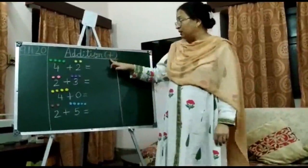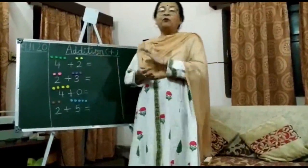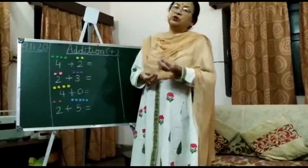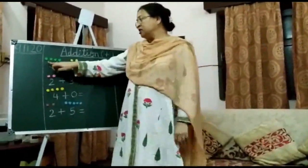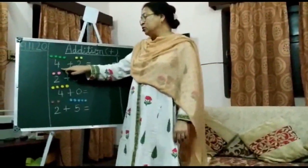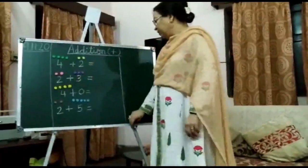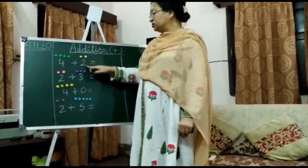The sign of addition is plus. Today I have done this activity with clay pom-poms. You can even use paper and wool. As you can see, there are 4 pom-poms here, so this number is 4, and there are 2 pom-poms here, so it is 2.